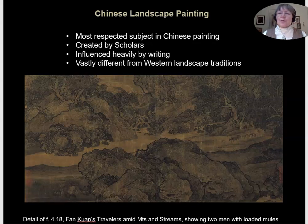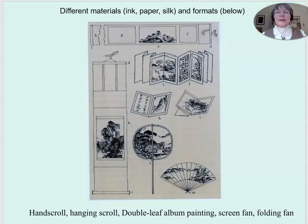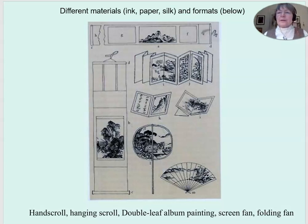There is a huge difference between East and West in terms of landscape traditions, and that of course includes the relationship between humans and the natural world. In the detail at the bottom, which comes from figure 4.18 in our textbook — Van Kwan's painting, Travelers Amid Mountains and Streams — you can immediately pick up on some of those incredible differences. It's inevitable that there will be significant differences when artists are using different materials, different formats, and fundamentally serving different needs.